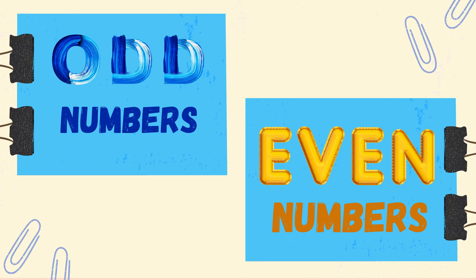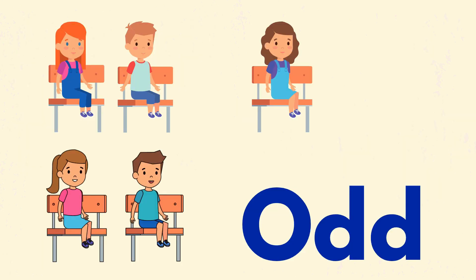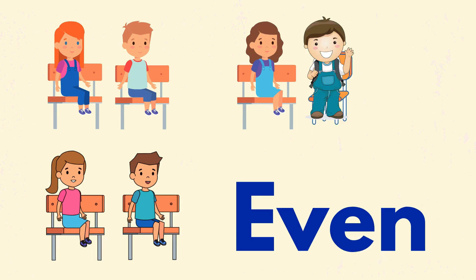Did you know that whole numbers can be called odd and even? In our story, there were five students who came first in Mr. J's class. So when he decided to ask the students to work in pairs, one will be left out. It means that Mr. J's class is in an odd group. But when one more student comes, they can work in pairs because they are now even and no one will be left out.